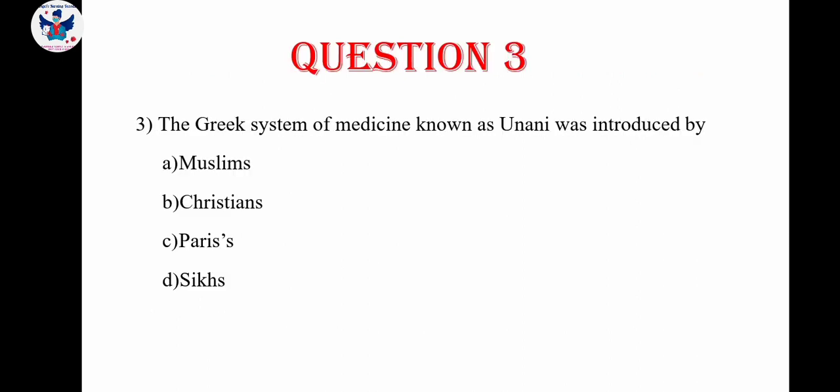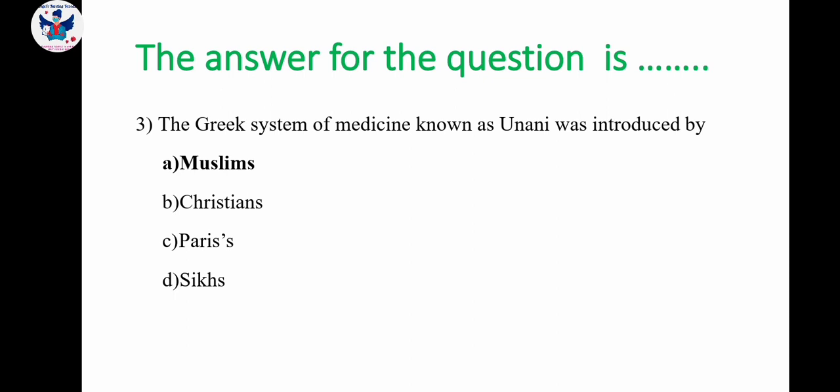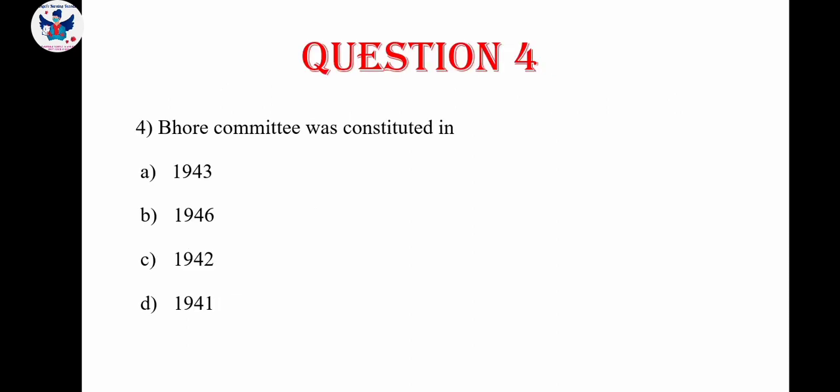Next question. The Greek system of medicine known as Unani was introduced by: A. Muslims, B. Christian, C. Parsis, D. C. The correct answer is option A — Unani was introduced by Muslims.